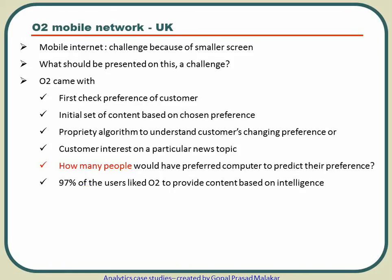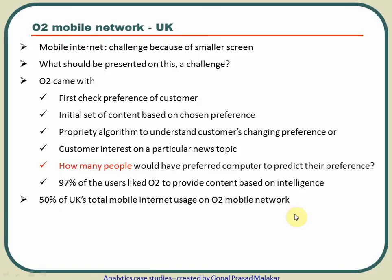This helps customers find relevant content quickly, and it helps O2 because customers enjoy the experience and stay on the network. Around 2012, 50% of the UK's total mobile network usage was on O2 alone. That is the power of applying intelligence — it helps customers read what they need quickly, and it helps the network provider grow their business as more customers keep coming back.